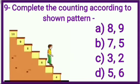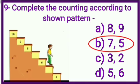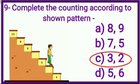Sum number 9. Complete the counting according to shown pattern. Students, for answer, we have 4 options. Option A: 8 and 9. B: 7 and 5. C: 3 and 2. And D: 5 and 6. See kids, we have shown a child coming downstairs.